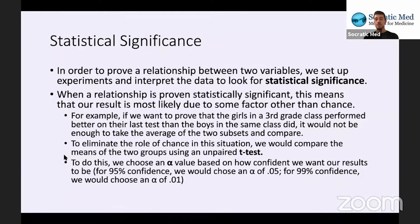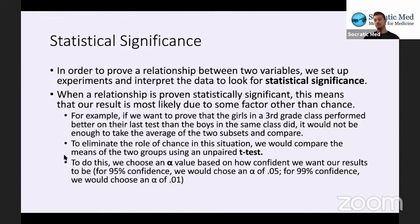If we choose an alpha of 0.05, we'll get a result that is either statistically significant or not statistically significant — and we can say that with 95% confidence. We could say with 99% confidence if we chose an alpha of 0.01.